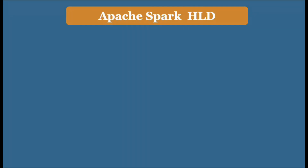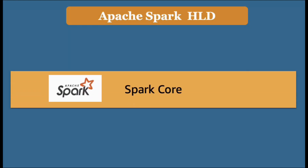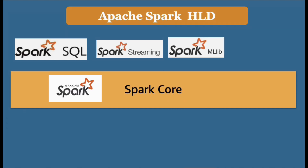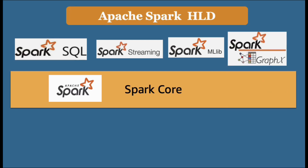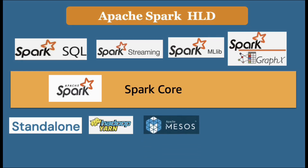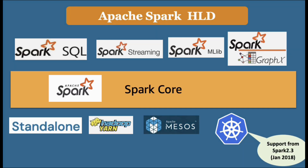Looking at the high-level Spark architecture diagram: we have the Spark core as the primary engine, and then multiple modules — Spark SQL, Spark Streaming, Spark MLlib, and Spark GraphX. For the cluster manager, Spark provides multiple options: the first is Standalone, which is built into Spark itself; the second is Hadoop YARN, a popular resource manager; then Mesos; and the fourth is Kubernetes, which was added in Spark 2.3 back in 2018.